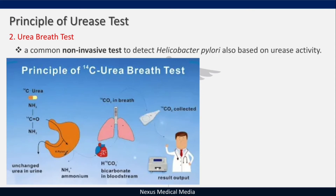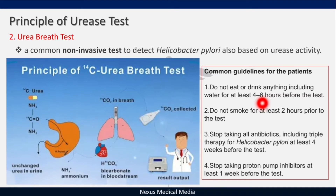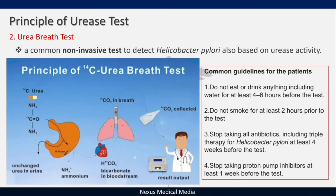There are rules for patients undergoing the Urea Breath Test. Number one: do not eat or drink anything, including water, for at least four to six hours before the test. Number two: do not smoke for at least two hours prior. Number three: stop taking all antibiotics, including triple therapy for H. pylori, for at least four weeks before the test. Stop taking proton pump inhibitors for at least one week before — these last two are critical to avoid false negatives.